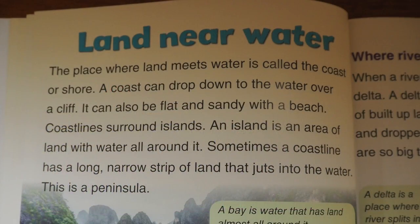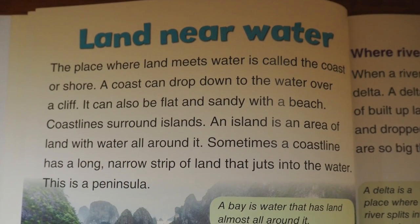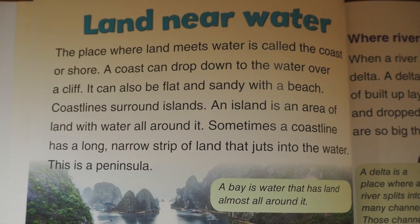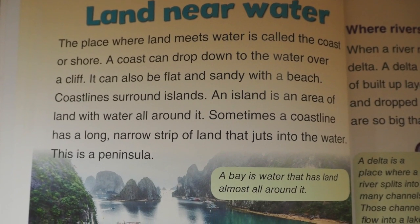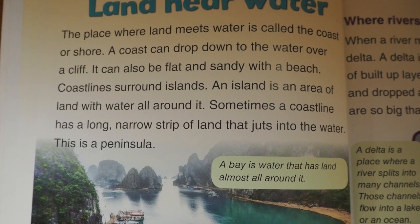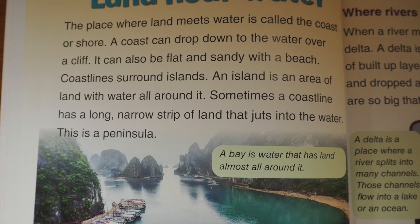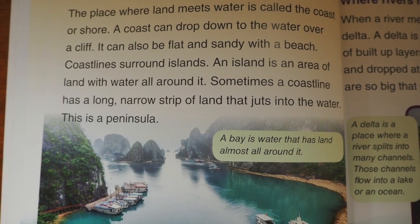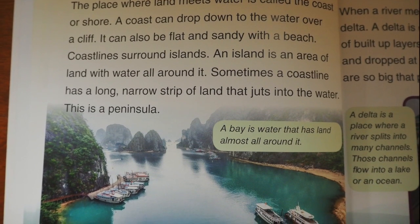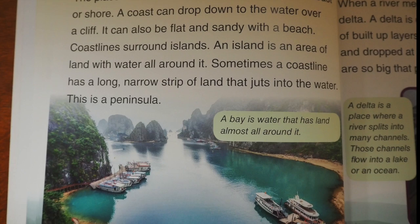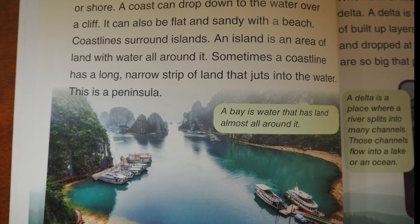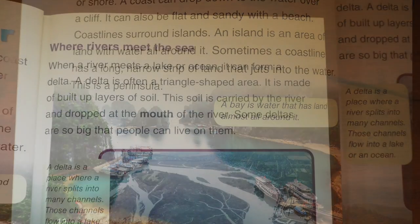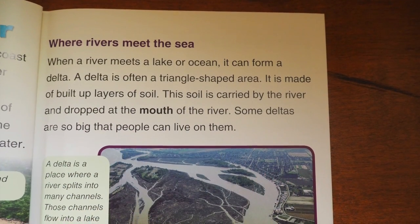The place where land meets water is called the coast or shore. A coast can drop down to the water over a cliff, or it can be flat and sandy with a beach. Coastlines surround islands — an island is an area of land with water all around it. Sometimes a coastline has a long, narrow strip of land that juts into the water, called a peninsula.